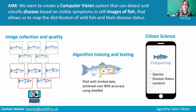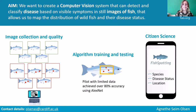We are working on selecting the best algorithm for our problem. We've done a pilot with limited data and achieved 80% accuracy using the AlexNet neural network, which is quite old now but was one of the first effective convolutional neural networks available. Accuracy here means the ratio of the algorithm correctly predicting labels we've already assigned — either healthy or having saprolegnia in this case.